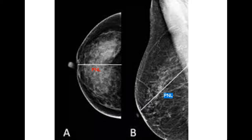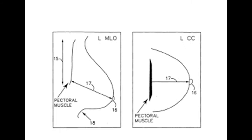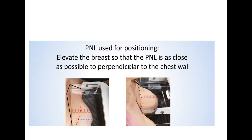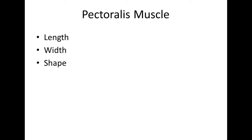The posterior nipple line is the line which joins the nipple to the pectoralis major muscle. In both MLO and cranio-caudal views, we draw a posterior nipple line. During mammography, we elevate the breast so that the posterior nipple line is as close as possible and perpendicular to the chest wall.